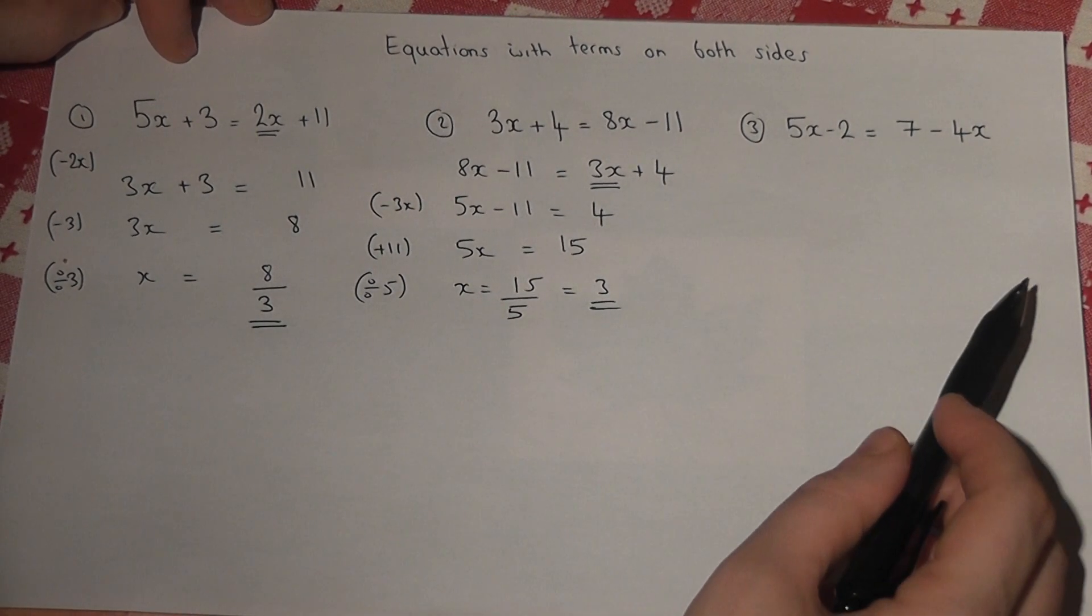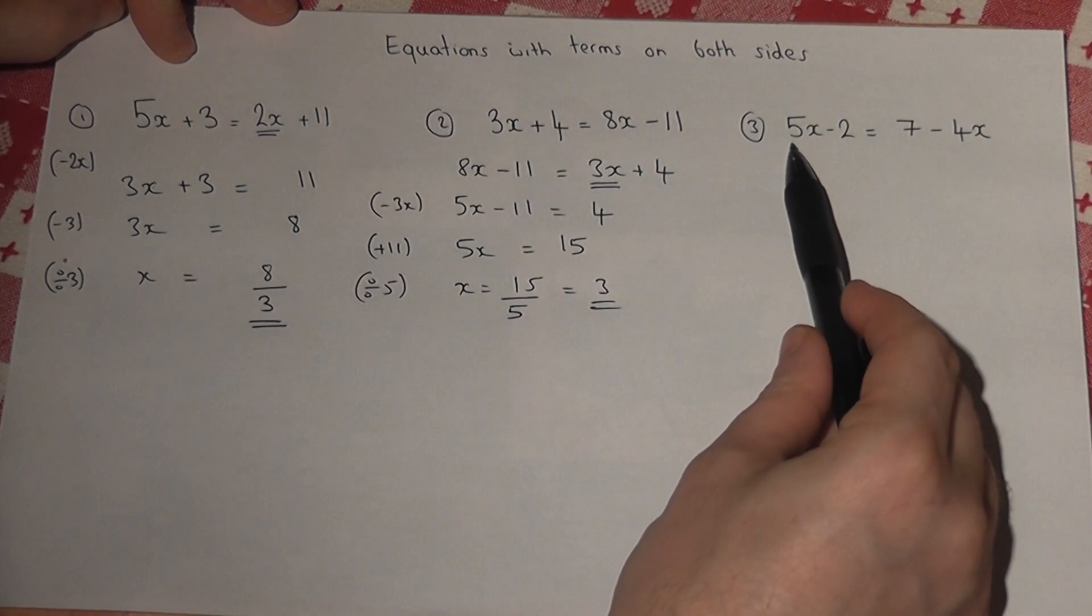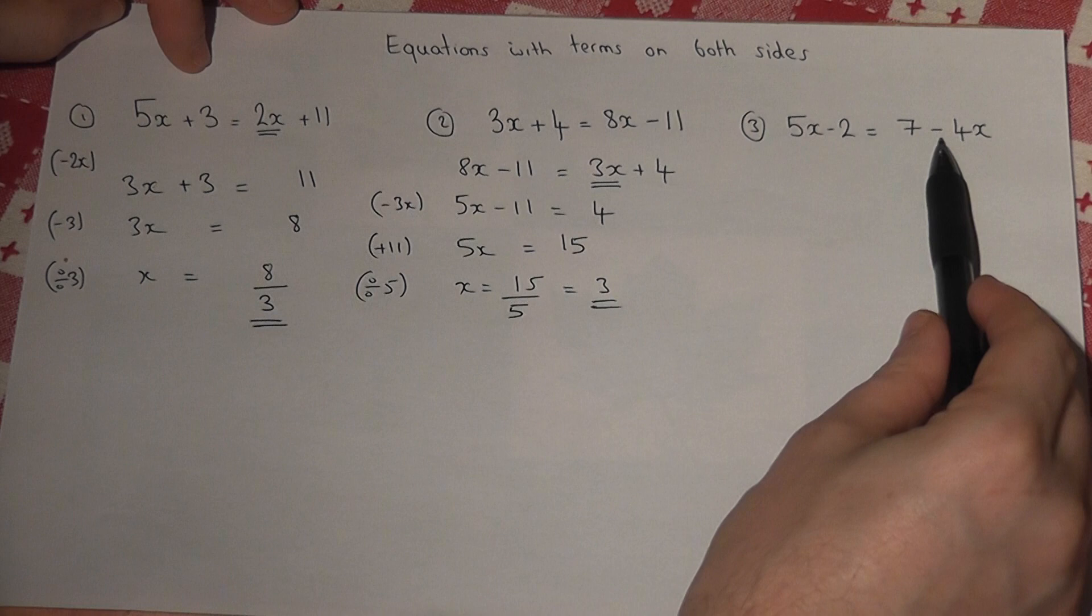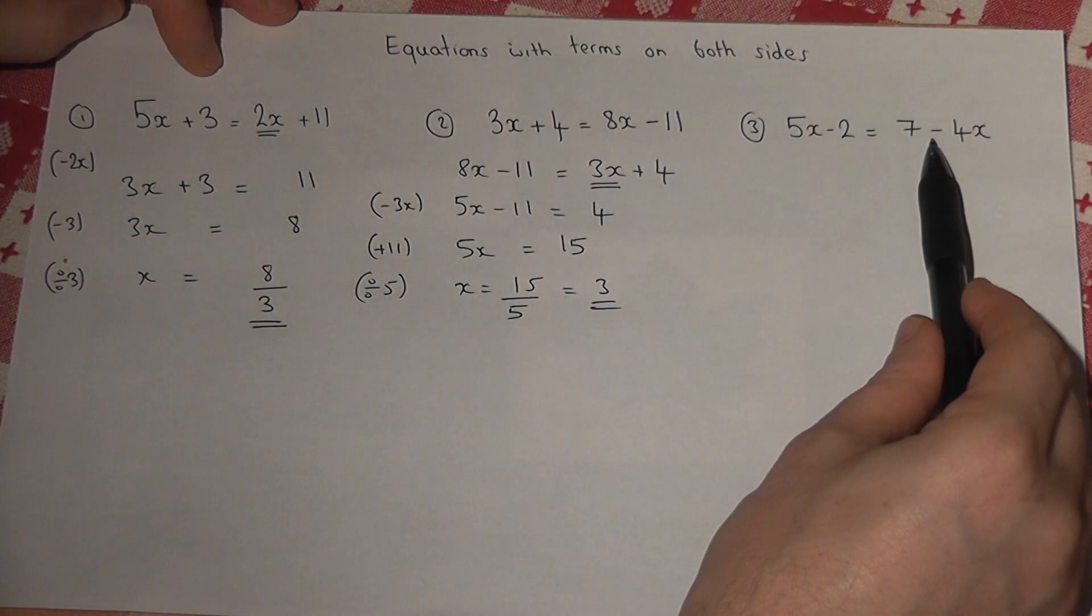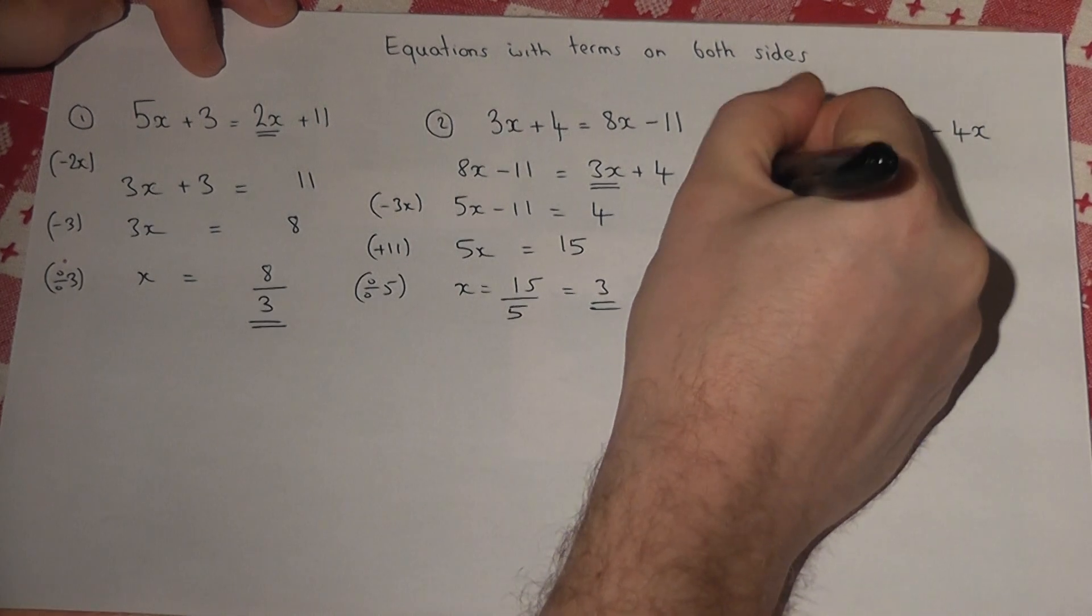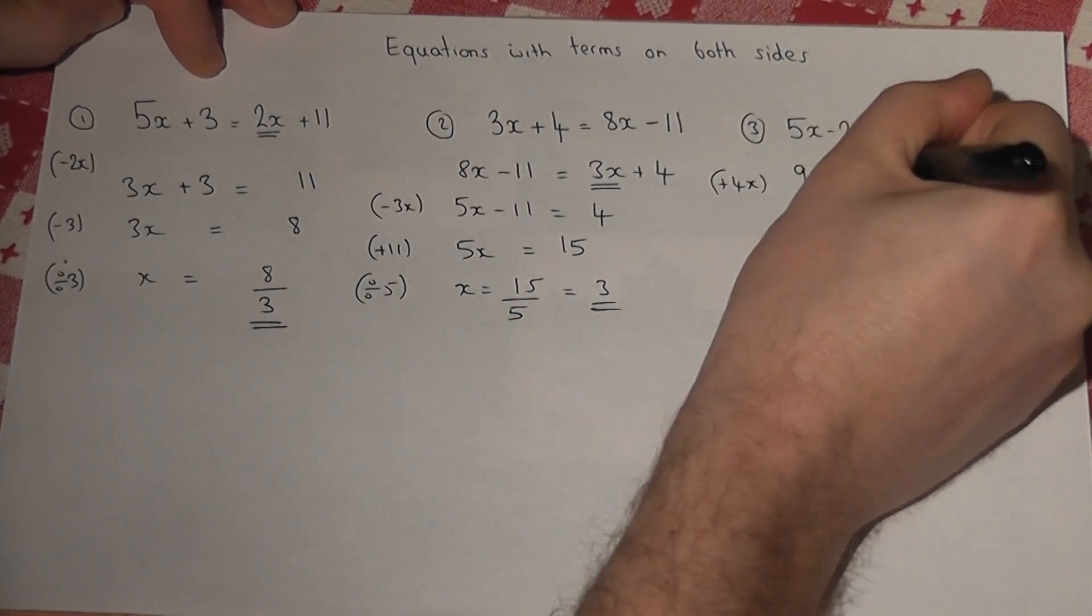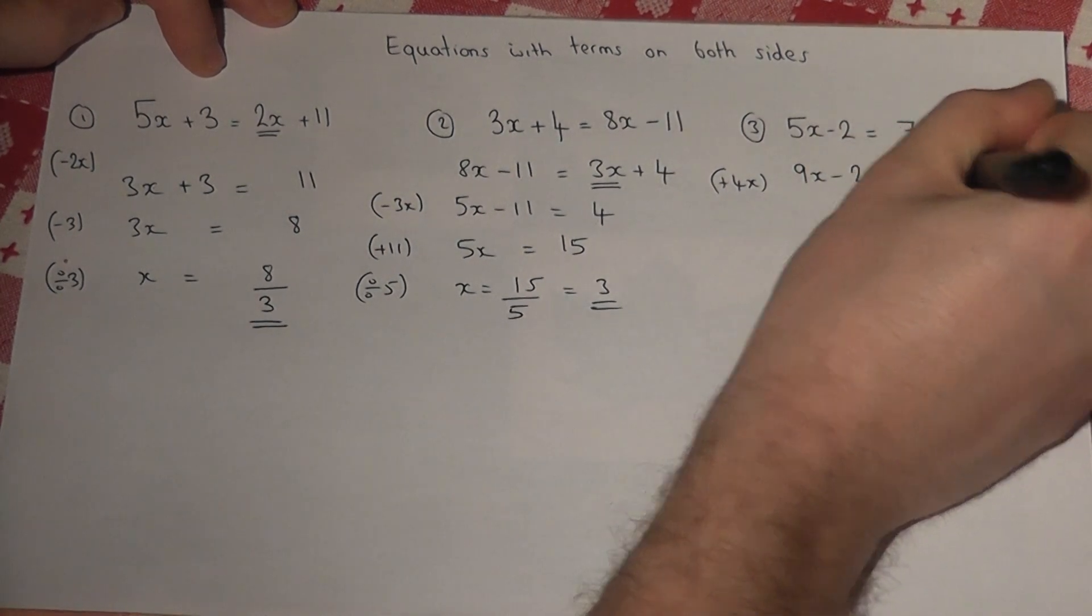So in the third example, there are more x's on the left hand side, I'm okay there, but there's a minus 4x there. So I need to add 4x to cancel that out. So this becomes 9x, and the right hand side now becomes a 7.